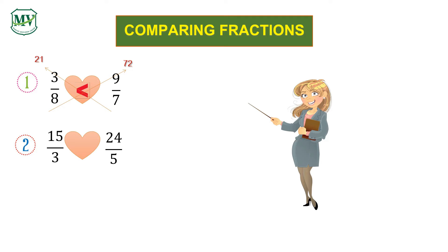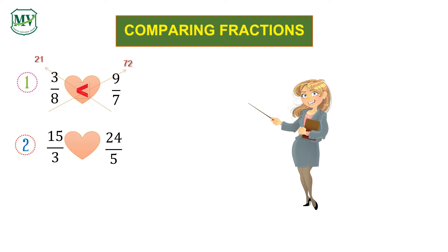Now let's learn some more. We have 15/3 and 24/5. Which one is greater? What symbol should we use — greater than, less than, or equal sign? In order to determine which one is greater, we can use cross multiplication. 15 times 5 is equal to 75, and 3 times 24 is equal to 72. 75 is greater than 72, therefore 15/3 is greater than 24/5. Do you understand? Good job!